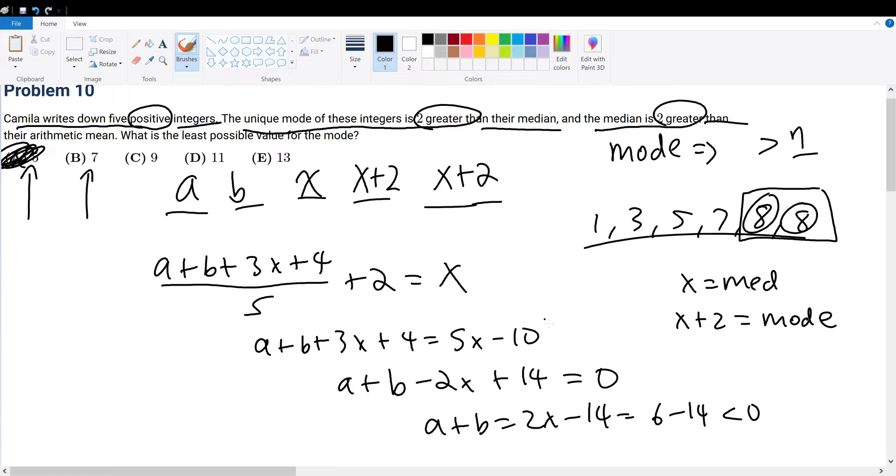What about b? When b is equal to 7, then that means the mode is 7. That means x is equal to 5. If x is equal to 5, then again, we have another case of 10 minus 14. 10 minus 14 is also less than 0. Therefore, b is out of the question as well.